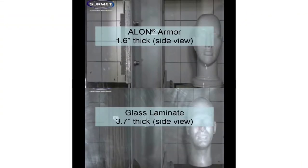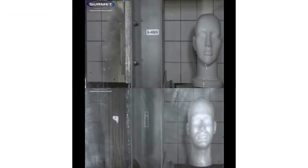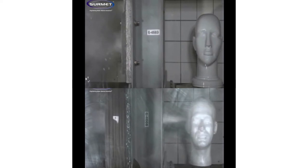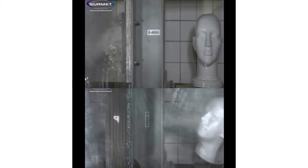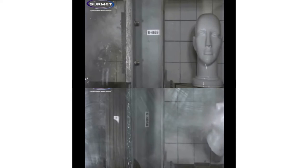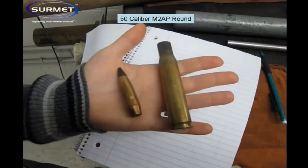In this video from the armored glass company Cermet, a 1.6 inch pane of ALON laminated glass prevents a .50 caliber rifle bullet from penetrating through to the test dummy, compared with a 3.7 inch thick pane of traditional bulletproof glass. That's a .50 caliber bullet being stopped by only 1.6 inches of glass.